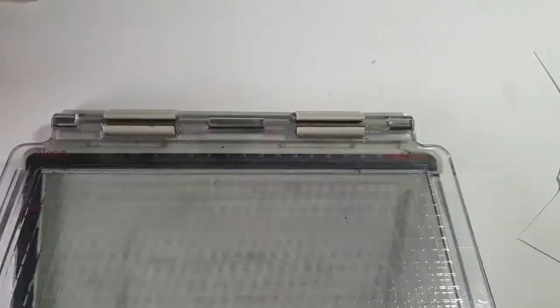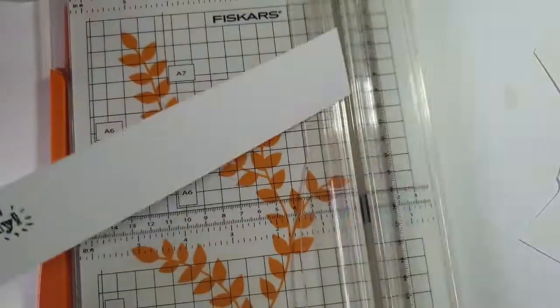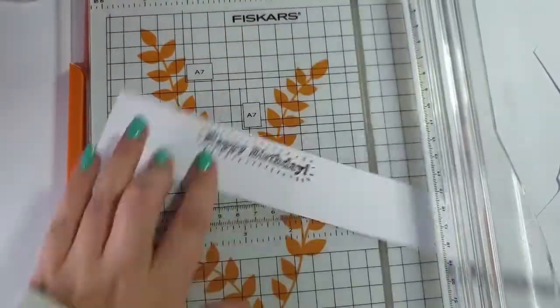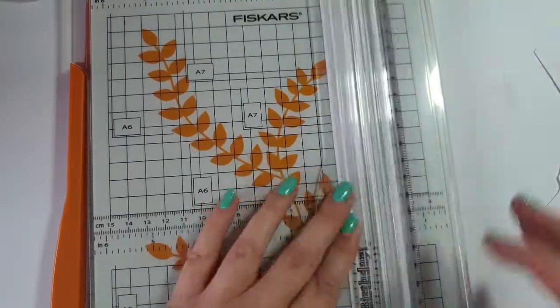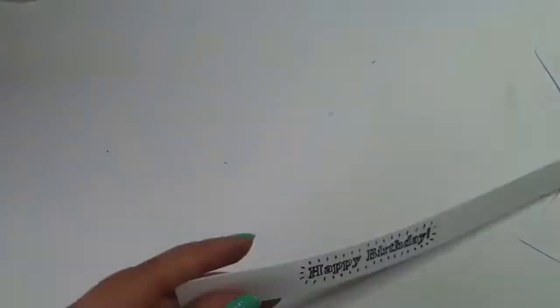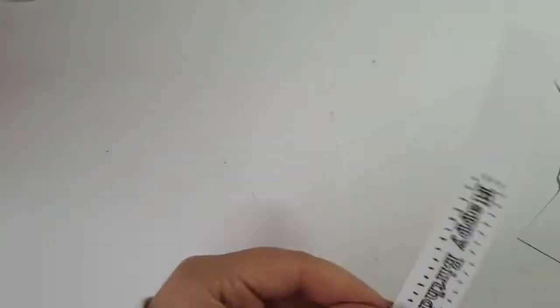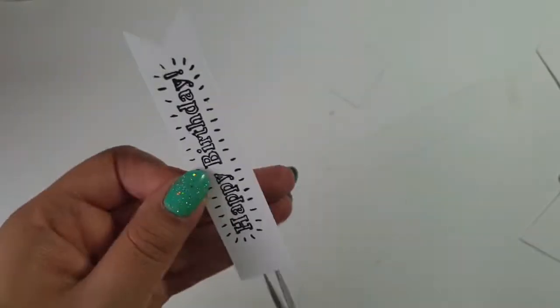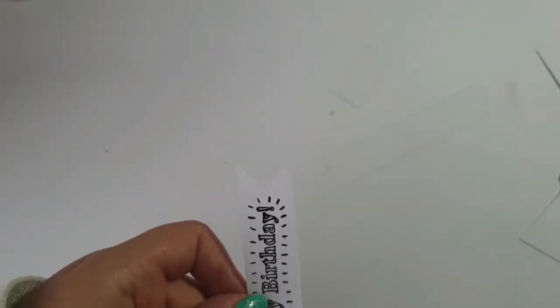I stamped out the happy birthday and then I'm going to take some time to trim it down. This is literally what I do in every card. I trim it down to a really long strip and then I make banners either side. I really like the effect but I do think it's time for me to think of some new things as well.